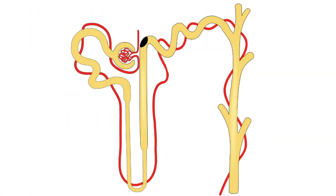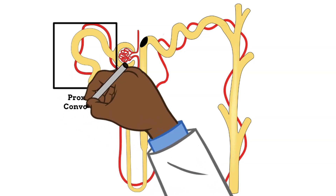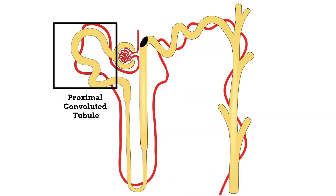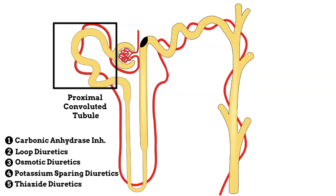This is a picture of the renal tubule. I covered the different parts and functions in depth in my previous video, Introduction to Diuretics, so please check that out first. The carbonic anhydrase inhibitors work at the proximal convoluted tubule portion of the renal tubule. An easy way to remember this: when you list all the different classes of diuretics alphabetically, the carbonic anhydrase inhibitors are first, just like how the proximal convoluted tubule is the first part of the renal tubule.